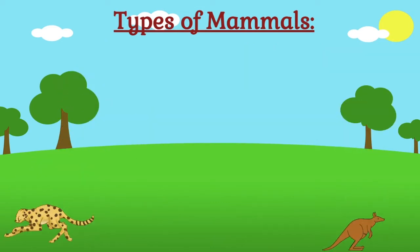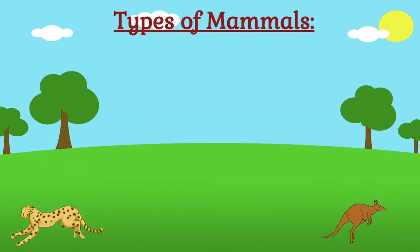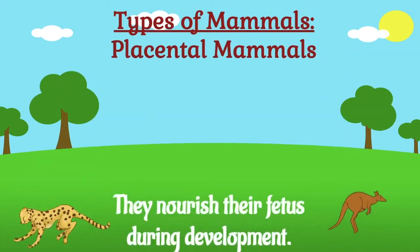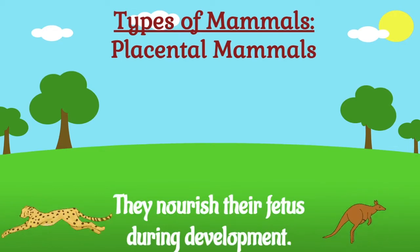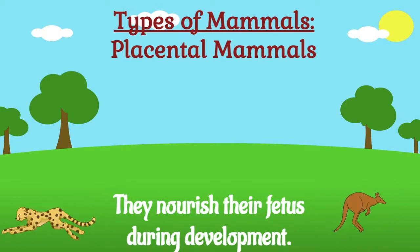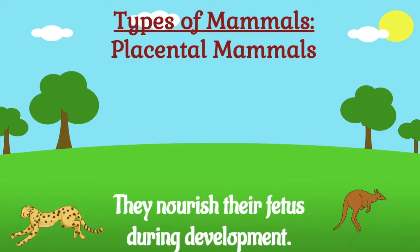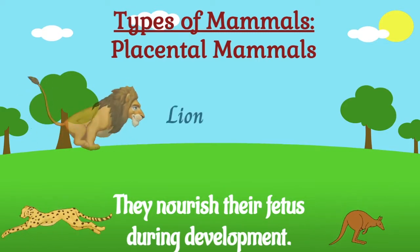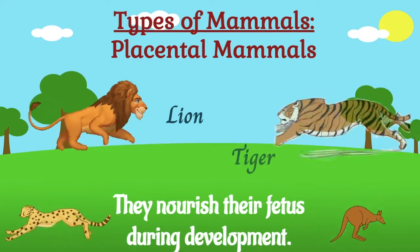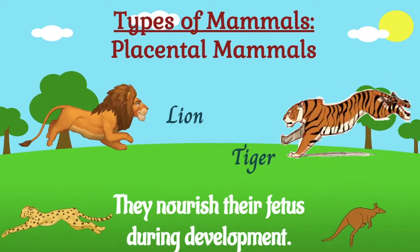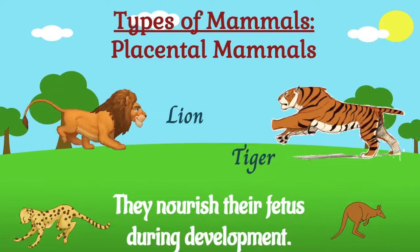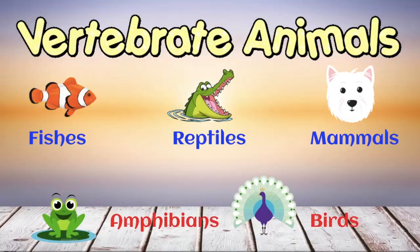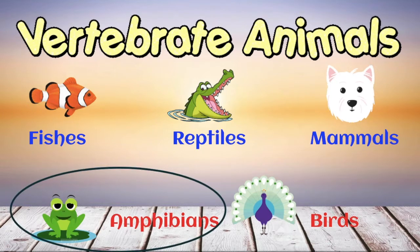The last type is the placental mammals. They are the mammals that have a placenta where they nourish their offspring during development. Some examples are lion, tigers, bats, bears, hedgehog, capybara, and many more.